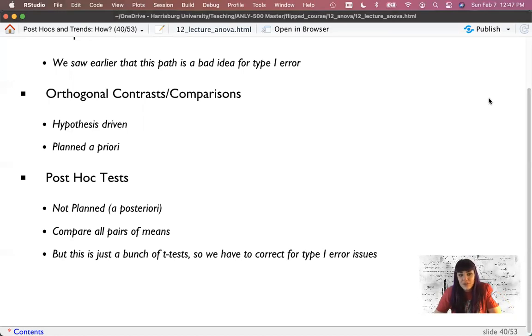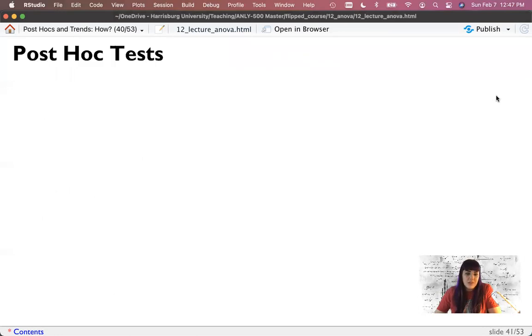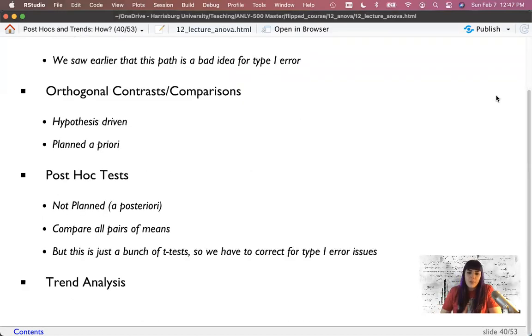But practically, mathematically, this is similar to just a bunch of T-tests. So we have to do something for that type one error problem. And the last thing we can do is what's called a trend analysis. So trend analyses are where you test if that categorical IV that sort of has a continuum presents a linear trend, a curvilinear trend. You can do, you know, squared to the third, to the fourth, et cetera. And this would be similar to treating it as actually continuous.